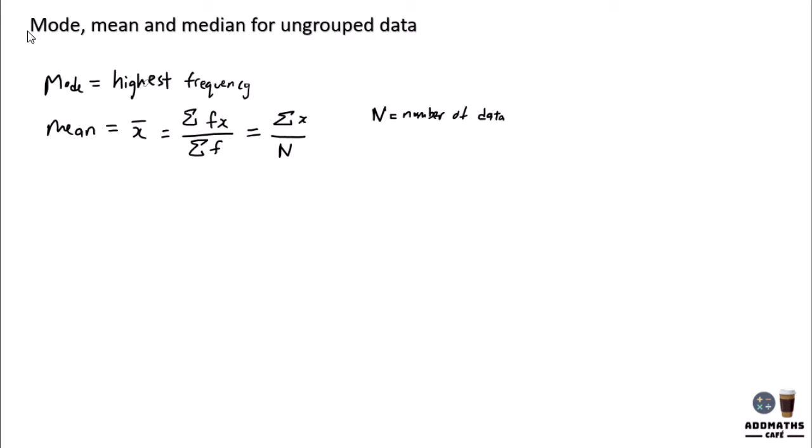And in this case, to find median, first you need to arrange your data accordingly from small to big. And you need to find the n plus 1 over 2 position.